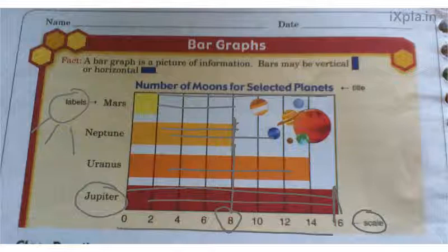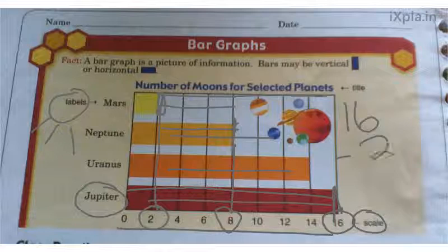Question 1e asks how many more moons does Jupiter have than Mars. We know Jupiter has 16. When we look at Mars, they have two. We subtract: 16 minus 2, and our answer is going to be 14. Jupiter has 14 more moons than Mars.